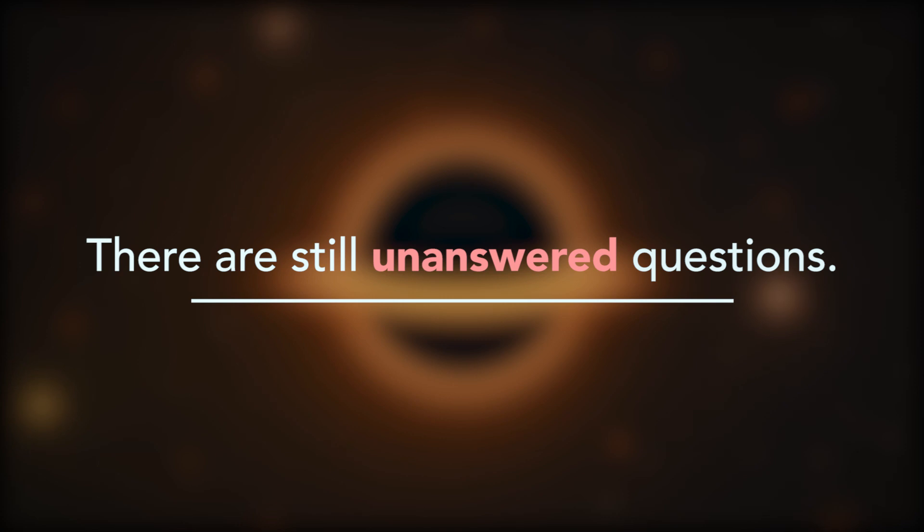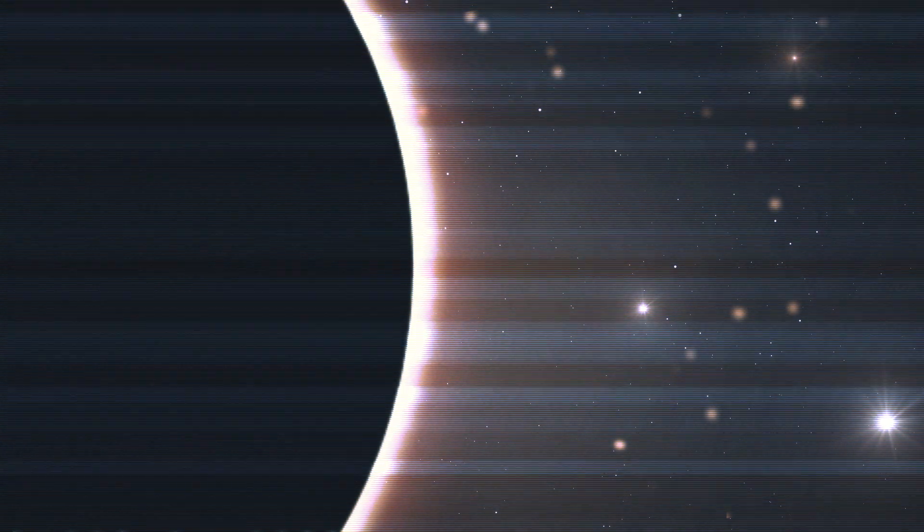Even then, there are still unanswered questions. How is information encoded on the event horizon? Is there a firewall? Does the event horizon as we even think of it exist?